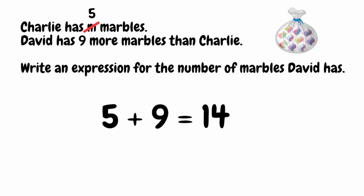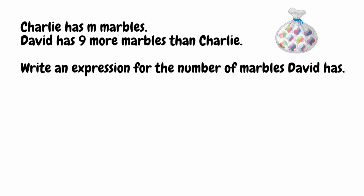So let's go back to the original question. If Charlie has m marbles and David has nine more, all we need to do is add nine onto the amount that Charlie has. We've been given the variable m. So if Charlie has m marbles, David is going to have, as an expression, m plus nine marbles. And that would be the answer to this one.